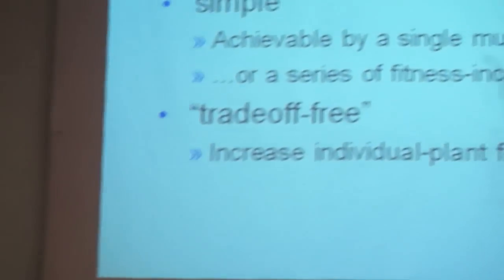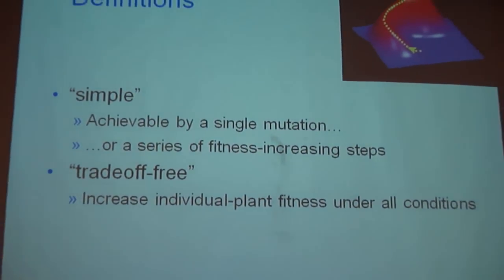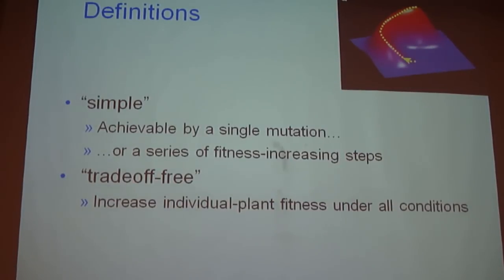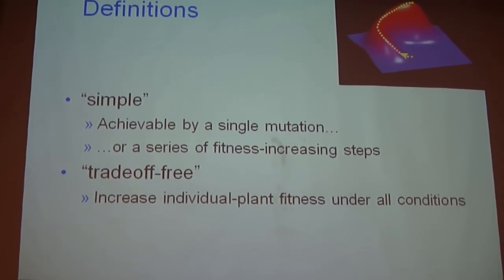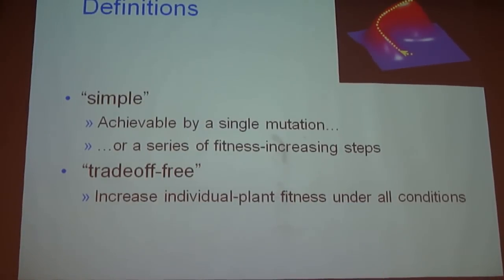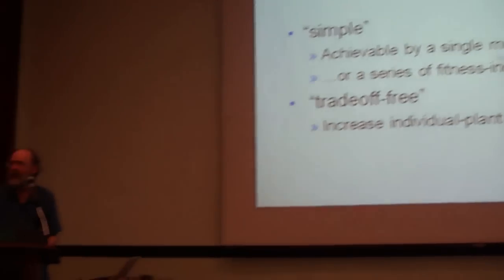Now I do have an example in the book of a quite convincing case of repeated evolution where it must have passed through a lower fitness intermediate. But I'm not including that in my definition of simple — as something that's bound to have arisen and been tested by natural selection. The second part: I'm only talking about trade-off-free improvements, things that would increase individual plant fitness under all conditions.